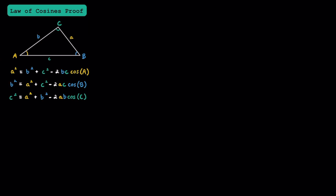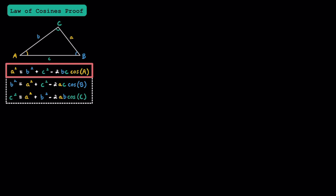Now let's talk about where the law of cosines comes from. Remember that there are three different formulas for the law of cosines. While having three different formulas may be a little intimidating, if you just memorize one of them, the other two follow a similar pattern. For this video, I'm just going to be covering where this formula comes from: A squared equals B squared plus C squared minus 2BC times cosine of angle A. To prove this, I'm going to start by drawing an altitude, or the height, from C to the bottom.